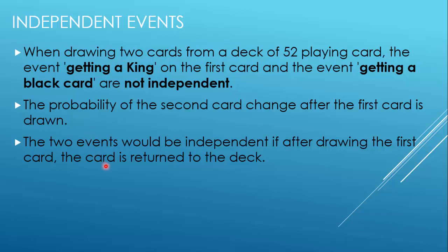But if you replace the card — put back the card or return the card to the deck — then the events will become independent. So it depends whether you have replaced the card or not. If you have replaced the card, the events become independent. If you do not replace the card, then getting a king and getting a black card are not independent. This is the difference between dependent and independent events.